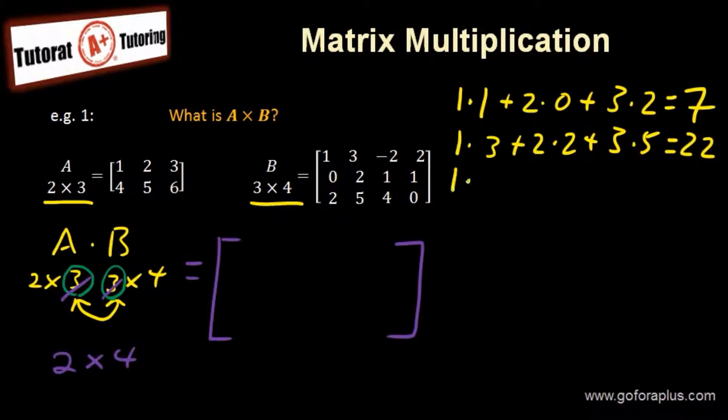Now we have 1 times minus 2 plus 2 times 1 plus 3 times 4. This cancels out minus 2 plus 2, and then we have 12.